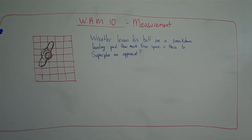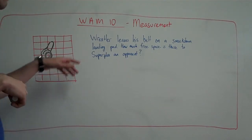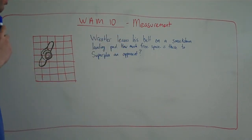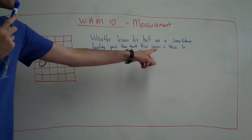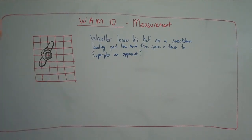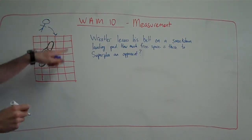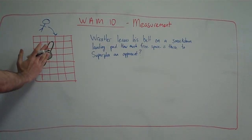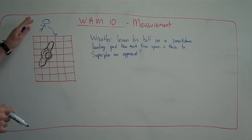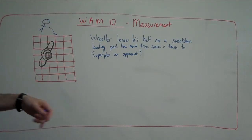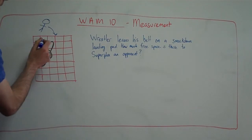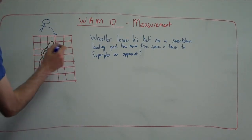First I have a practice question. A wrestler leaves his belt on a SmackDown landing pad. Here's the belt, here's the landing pad. How much free space is there to superplex an opponent? So there's some wrestler, and he wants to land somewhere on the pad. The belt is covering part of it because he left his belt on the landing pad, and he wants to land somewhere else, not on the belt, because that would hurt.